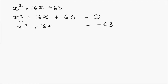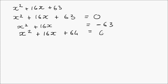We write this as a perfect square by adding to each side half the coefficient of x, squared. The coefficient of x is 16, half of 16 is 8, and 8 squared is 64. So we get x squared plus 16x plus 64 equals 64 minus 63. I need to pay more attention here — that should be minus 63, not minus 36.